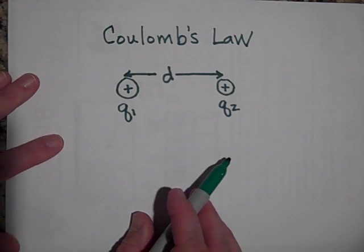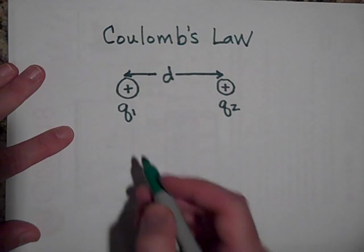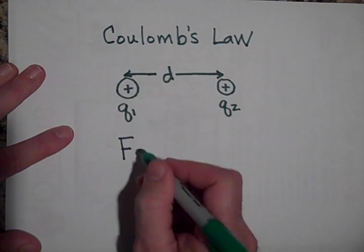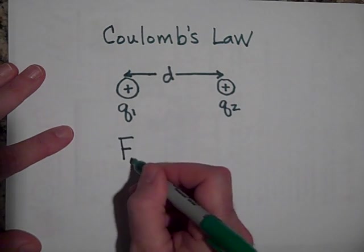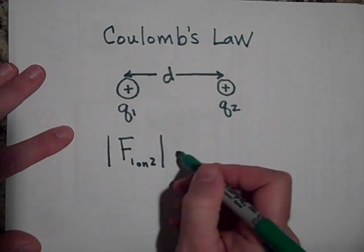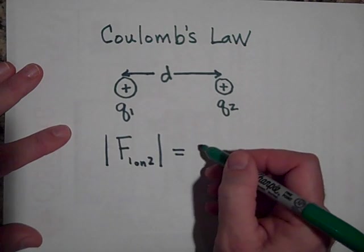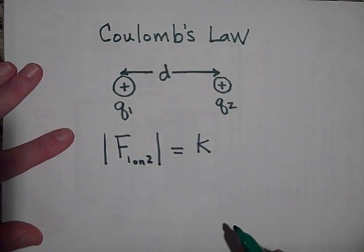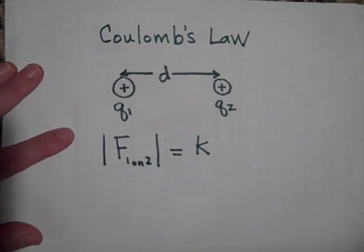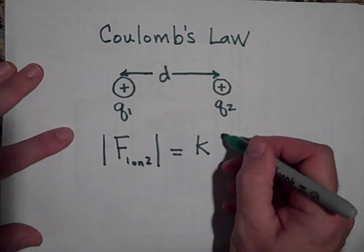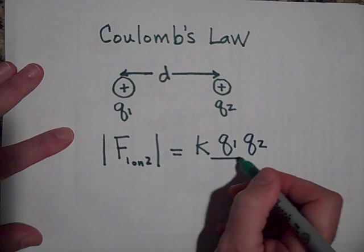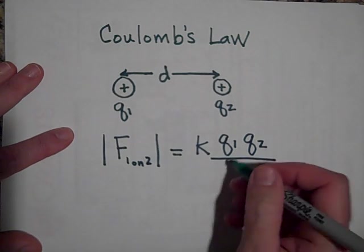Now, so what Coulomb's law says then is if you want to know the magnitude of the force of one on two, the electric force of one on two, just the magnitude, it's just going to equal a constant called Coulomb's constant, K. In your calculators that's C sub C, but here we use K. So it's going to be K times the magnitude of Q1 times the magnitude of Q2